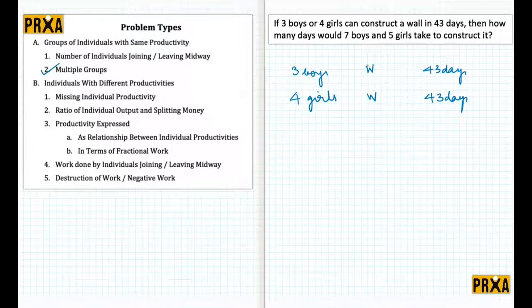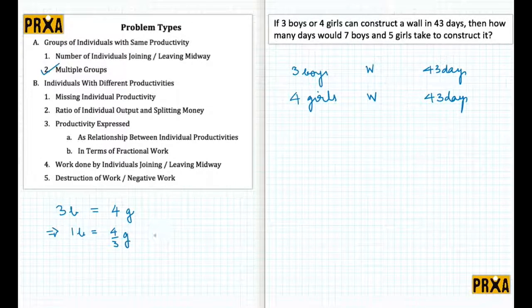Now as we can see here, we notice that the amount of work done in both cases is the same, the time that both of them take is the same. So this means that the output of three boys is actually equal to the output of four girls, which means that I can either replace one boy with four by three girls, or I can replace one girl with three by four boys. So this is the relationship that I'm going to use here.